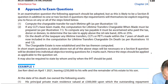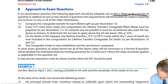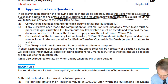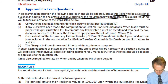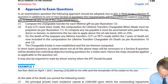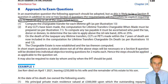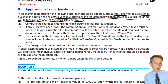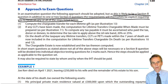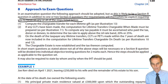In an examination question, the following approach should be adopted. As this is likely to be a section B question, in addition to one or two section A questions, the requirements themselves will be explicit, requiring you to focus on any or all of the steps listed below. Whereas example one is to compute the IHT payable during lifetime and as a result of the death of the taxpayer, Joe, what you're going to get in the exam is individual exercises.